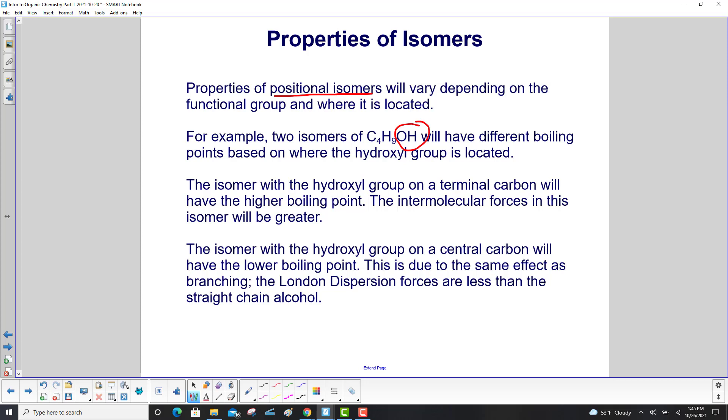The isomer with the hydroxyl group on a central carbon will have the lower boiling point. This is due to the same effect as branching. The London dispersion forces are less than the straight chain alcohol.